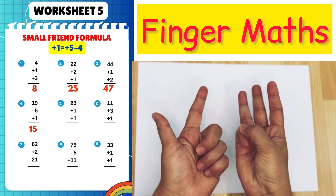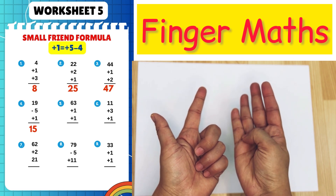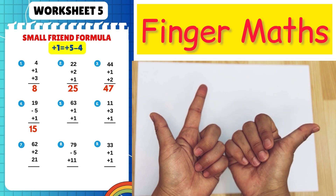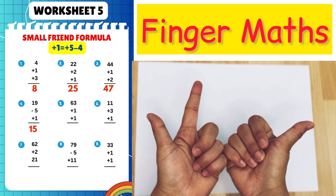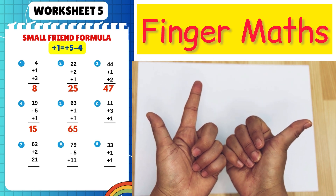63 plus 1 plus 1, plus 5 minus 4. Answer is 65.